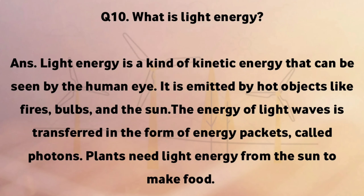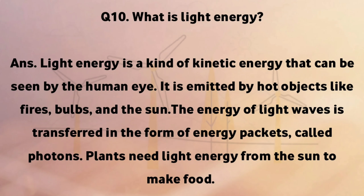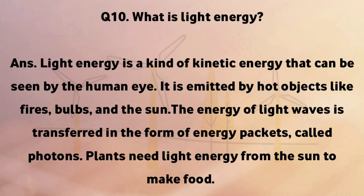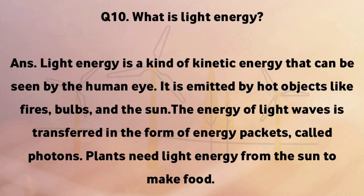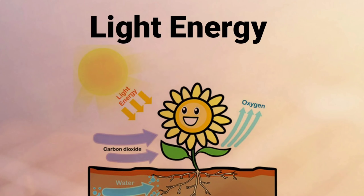What is light energy? Light energy is a kind of kinetic energy that can be seen by the human eye. It is emitted by hot objects like fires, bulbs, and the sun. The energy of light waves is transferred in the form of energy packets called photons. Plants need light energy from the sun to make food.